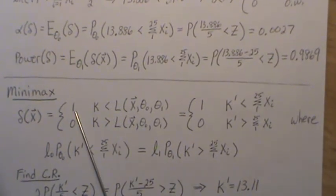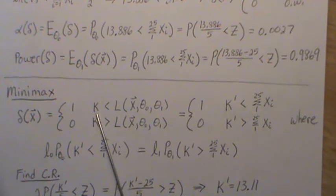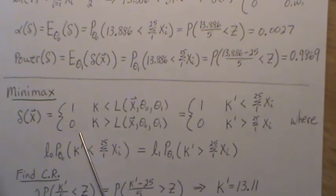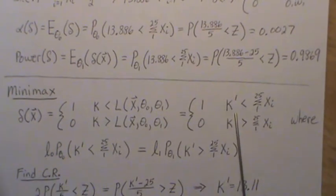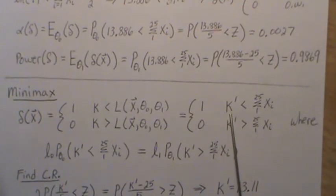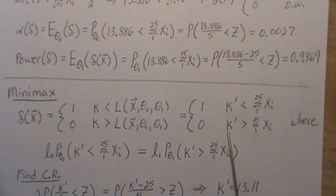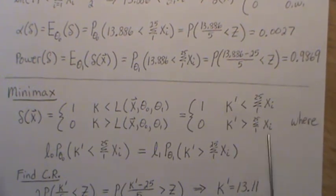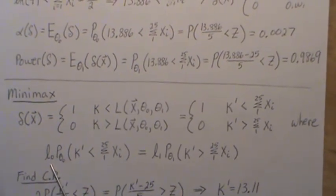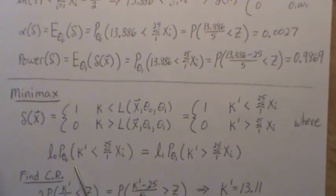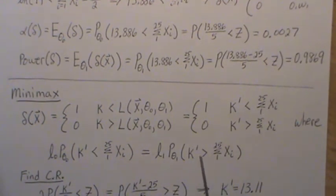Now the minimax test: the decision function rejects the null when the likelihood ratio is greater than some constant k, and does not reject otherwise. Based on the math we've done, this reduces to rejecting when the sum of the x_i's is greater than some constant k-prime. The k-prime is determined where two probabilities are equal: L0 times the probability of rejecting under the null equals L1 times the probability of not rejecting under the alternative.